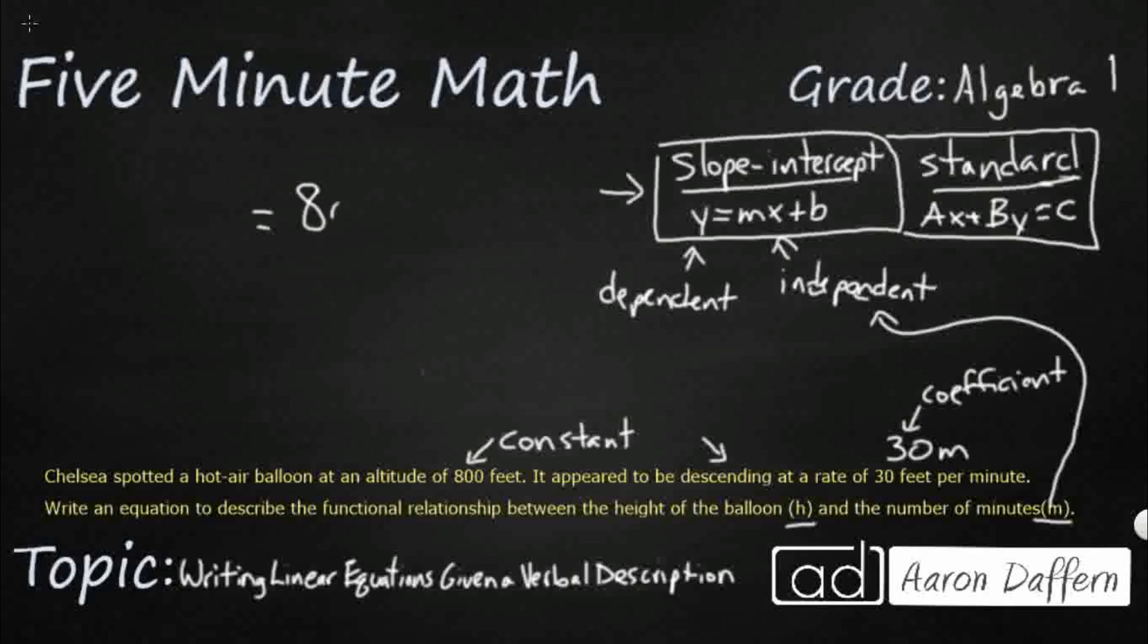So watch this. We're going to do this right here. We're going to start at 800 feet and we're going to descend 30 feet per minute. So that's going to be our slope and our x right there. And then what is our h, our dependent variable? There we go. That's going to go over here. Our height equals the starting altitude, 800, minus that 30 feet per minute. That's how you'd write it in slope-intercept form.